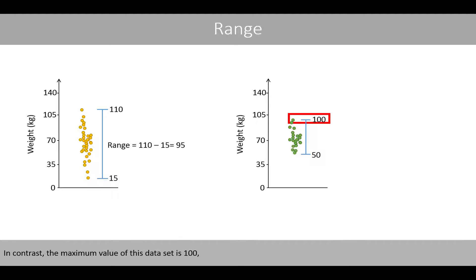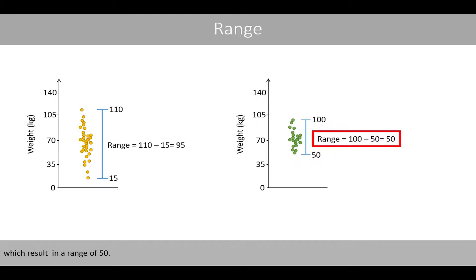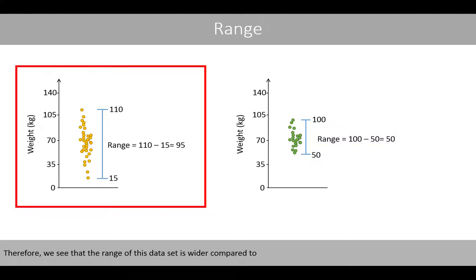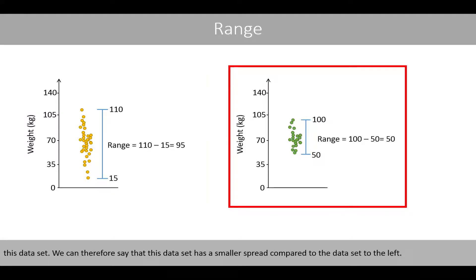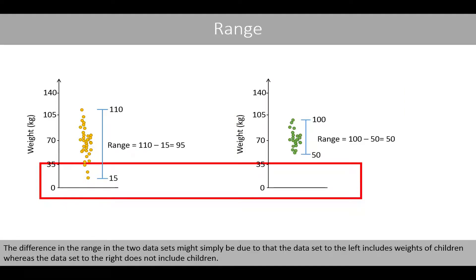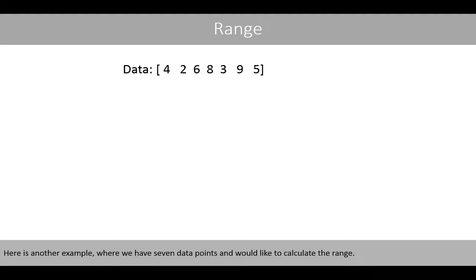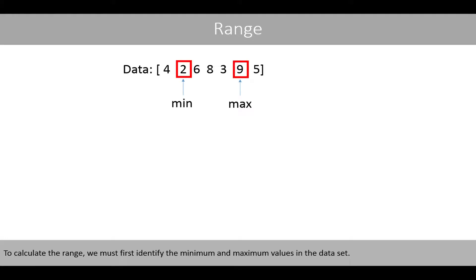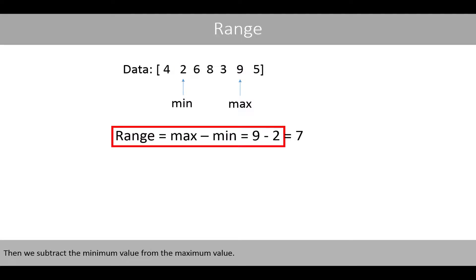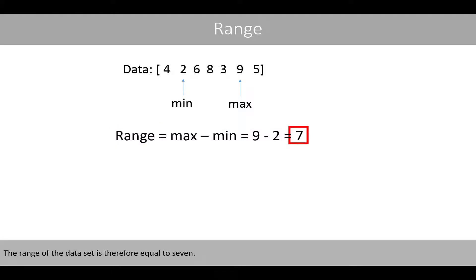In contrast, the maximum value of the second data set is 100 and the minimum value is 50, which results in a range of 50. Therefore, the range of the first data set is wider compared to the second. This difference may simply be due to the first data set including weights of children, whereas the second does not. Here is another example with seven data points: to calculate the range, we identify the minimum and maximum values, then subtract the minimum from the maximum. The range is therefore equal to 7.